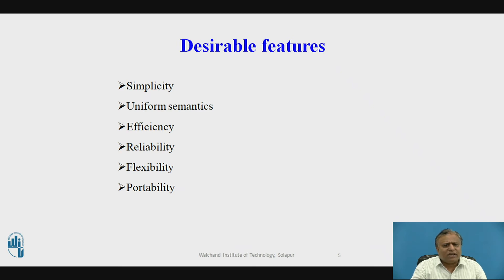Correctness is a feature related to the IPC protocol for group communication. Issues related to correctness include atomicity and ordered delivery. In ordered delivery, messages are delivered in order from one system to another. Survivability means messages will be delivered correctly despite partial failures.